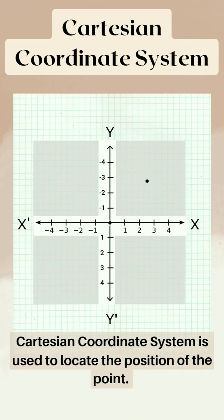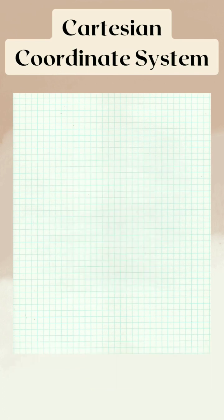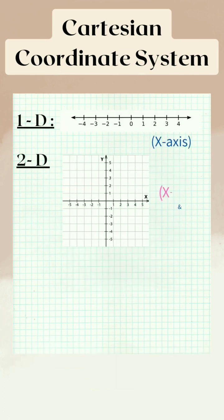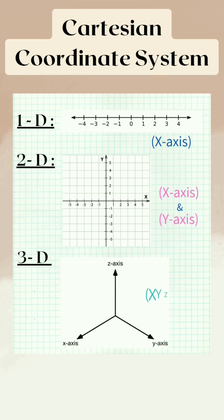So, this system is used to locate the position of a point in 1D with x-axis, in 2D with x and y-axis, in 3D with x, y and z-axis and so on.